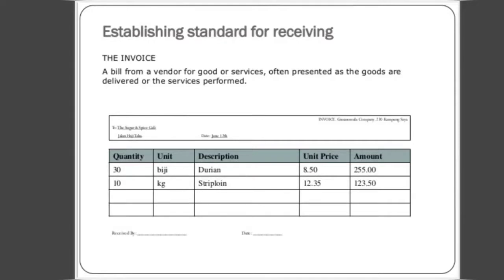Here is a performance example. In the first column, the quantity is 30 of Durian, the unit is BG, the unit price is 8.50, and the total amount for 30 quantities of Durian is 255 rupees. The second item is Strip Loin in kg, quantity is 10, the unit price is 12.35, and the total amount for 10 kg of Strip Loin is 123.50.